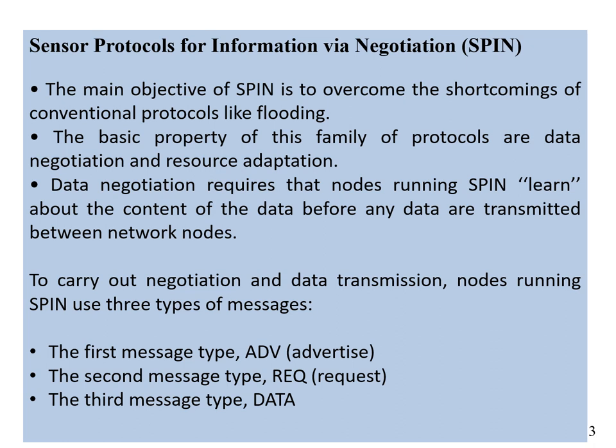To counter the inefficiencies of flooding, we have another protocol: SPIN — Sensor Protocol for Information via Negotiation. This is also a flat routing technique. The main objective of SPIN is to overcome the shortcomings of conventional protocols like flooding. The basic properties of this protocol family are data negotiation and resource adaptation, so nodes will not blindly broadcast. Before broadcasting, a node will advertise that it wants to send data, and then the receiving node replies whether it is able to receive it. This is a three-step procedure.